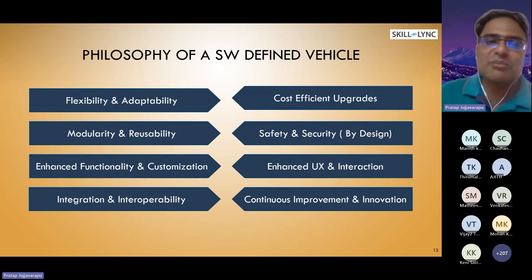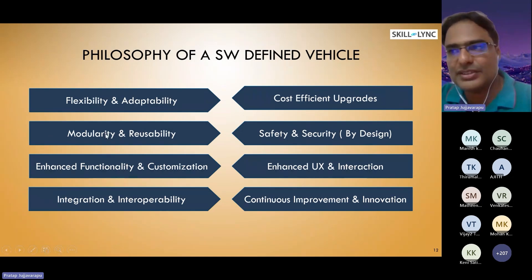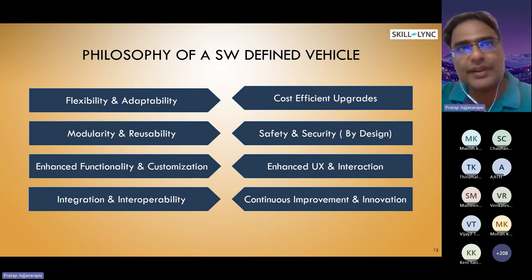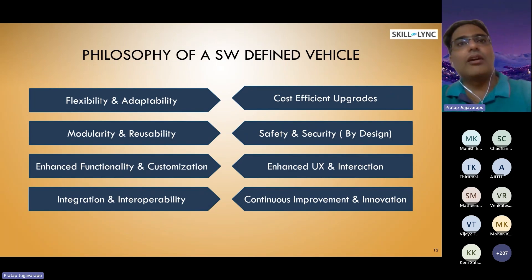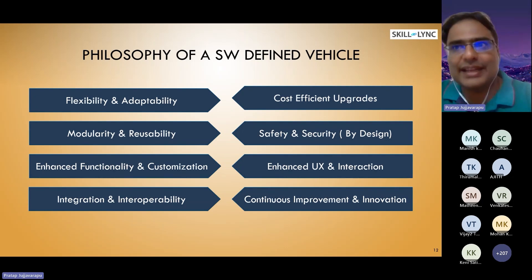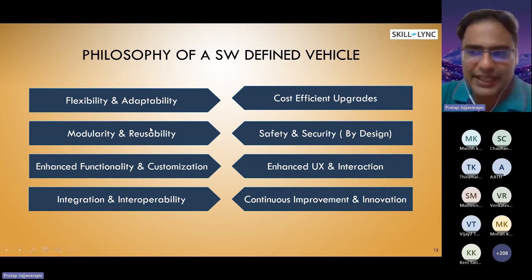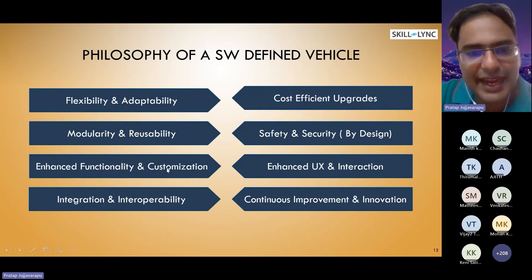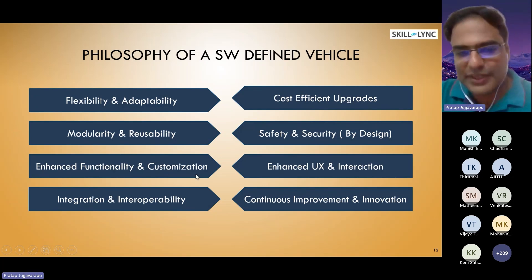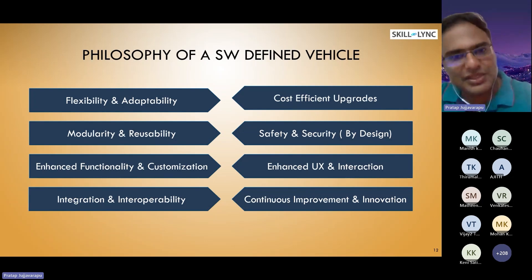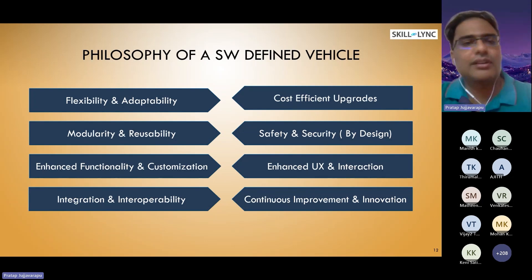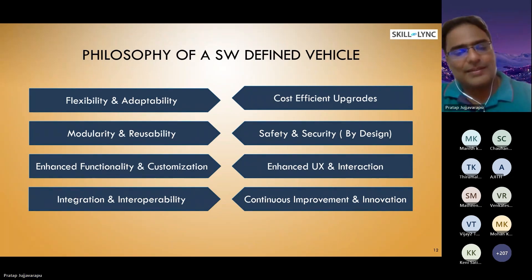The second one is modularity and reuse. Every functional component — or in traditional terms, every container — needs to be modular and should be reused across different vehicle models and skateboards. The next one is enhanced functionality and customization. If you make a software-defined vehicle and there is no proper customization given to the end user, that is denying the philosophy of a software-defined vehicle. You need to provide customization for any kind of feature for the driver or the owner, as well as enhanced functionality.